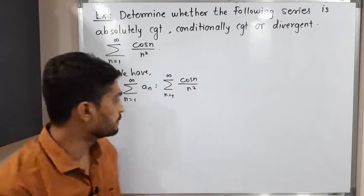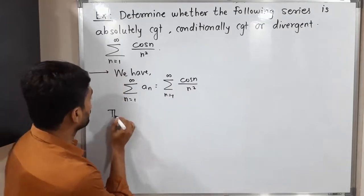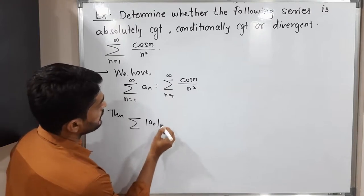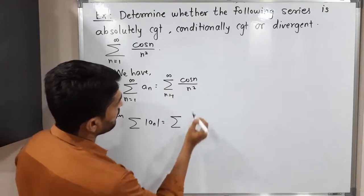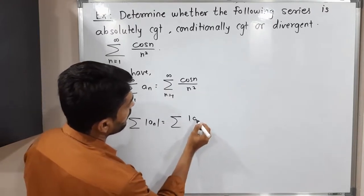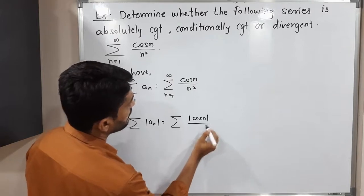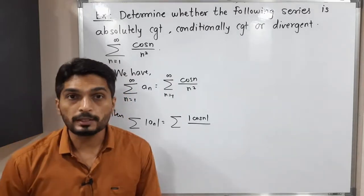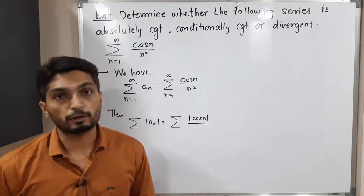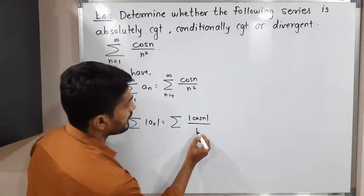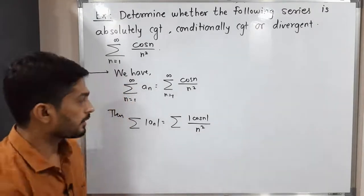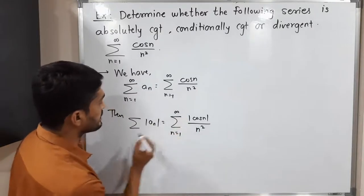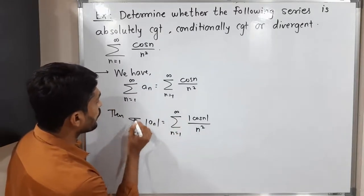You know well how to check whether a given series is absolutely convergent or not — we apply the modulus to it. So summation mod a_n is equal to summation of mod cos n upon n squared. There is no need to apply mod to the denominator since n squared cannot be negative, so we simply have n squared after applying mod. We have to check whether this series is convergent or not.